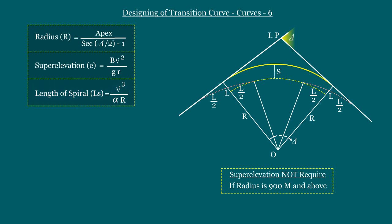Now we have to calculate the rate of change of radial acceleration. The formula to calculate alpha equals 80/(75 + 75% of v), where v is the design speed in kilometers per hour. The 75 percent of the design speed is considered for mixed velocity of traffic. Based on the design speed, the value of alpha will be between 0.5 and 0.8. However, departments of transportation in every country may consider a fixed value of alpha.